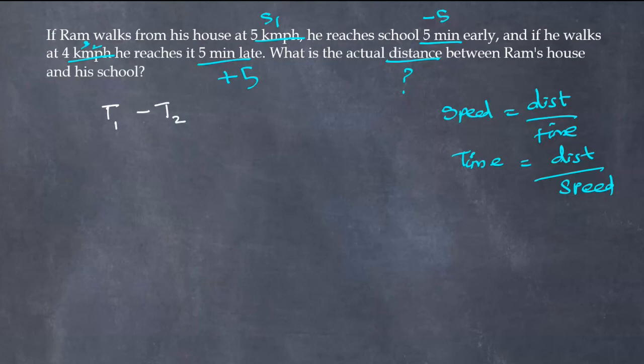T1 minus T2. So T1 is distance by S1 which is 5, minus T2 is distance by 4, which equals T1 is minus 5 minus 5.